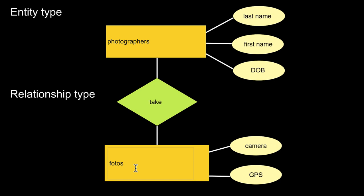By this relationship type, I'm not saying that photographers must take photos, or that they take six photos each, or that photos are taken by at most two photographers. I'm not saying those things. I just say it may happen that photographers are connected somehow to photos, and this connection is in the sense of them taking those photos.